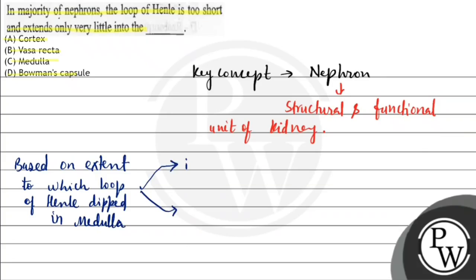Number one and number two. Number one is called cortical nephron, and the second one is juxtamedullary nephron.